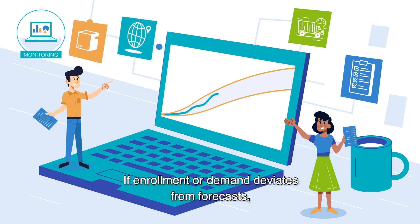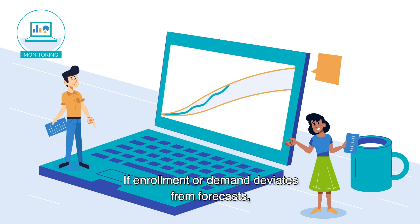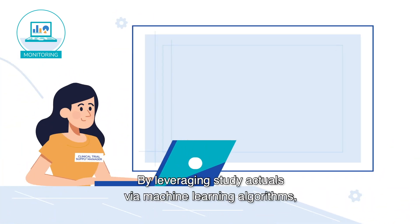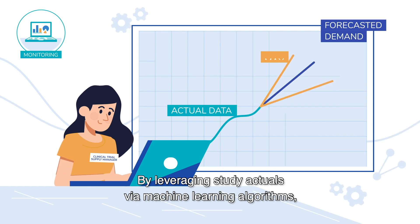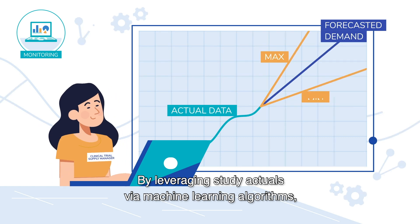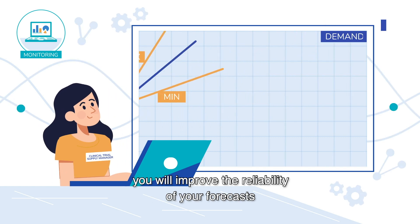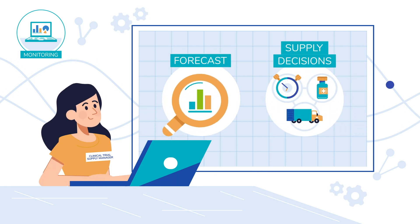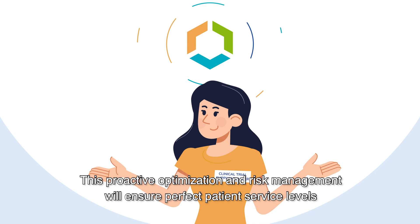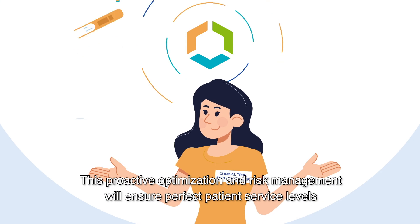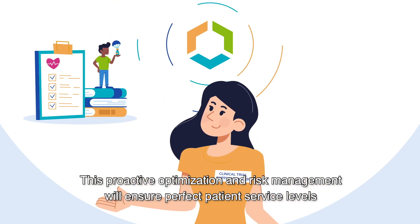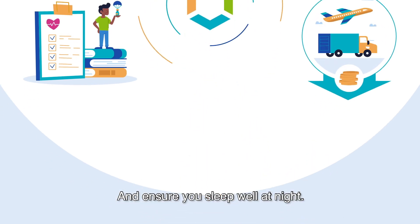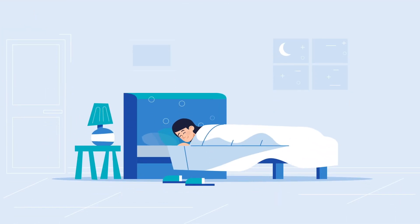If enrollment or demand deviates from forecasts, you'll notice it immediately. By leveraging study actuals via machine learning algorithms, you will improve the reliability of your forecasts and the robustness of your supply decisions. This proactive optimization and risk management will ensure perfect patient service levels while further minimizing drug waste, costs, and budgets — and ensure you sleep well at night.